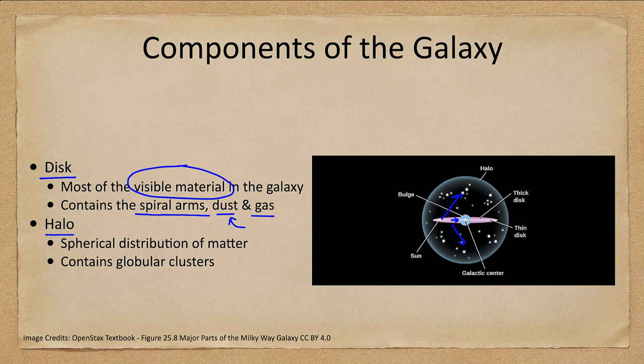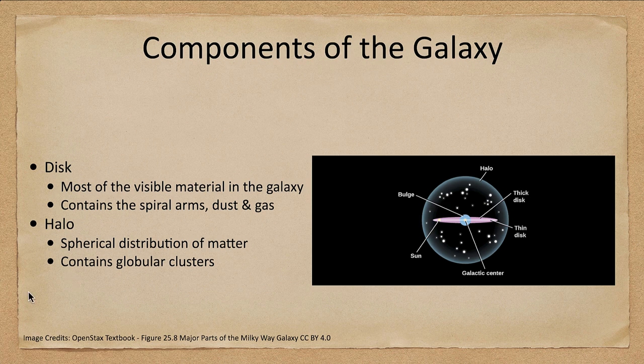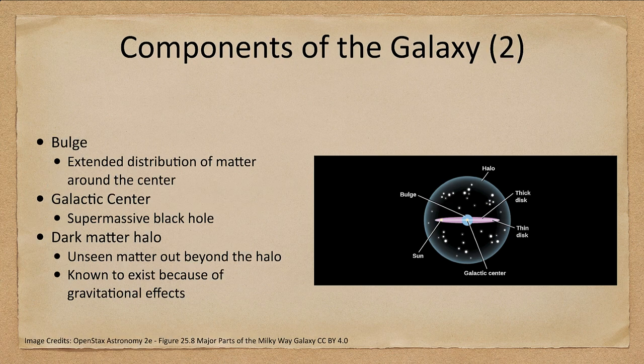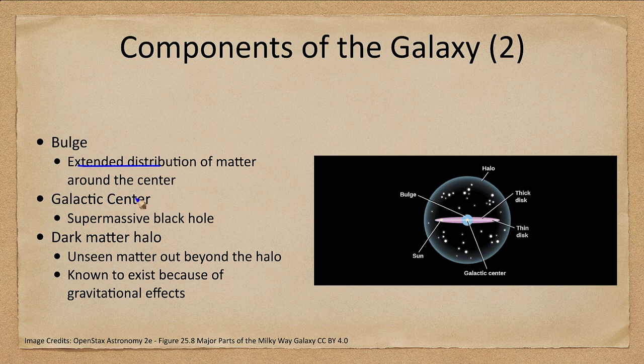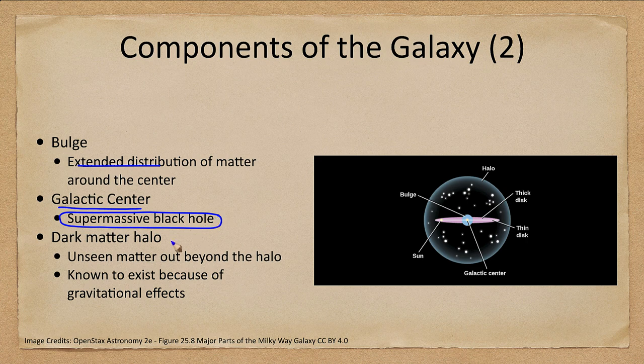We have the disk where most of the material is, we have a halo that surrounds it containing mostly globular clusters. And then we also have the bulge of material. There's an extended distribution around the center of our galaxy. We have the galactic center which we will look at later which contains a supermassive black hole about 4 million times the mass of our sun.